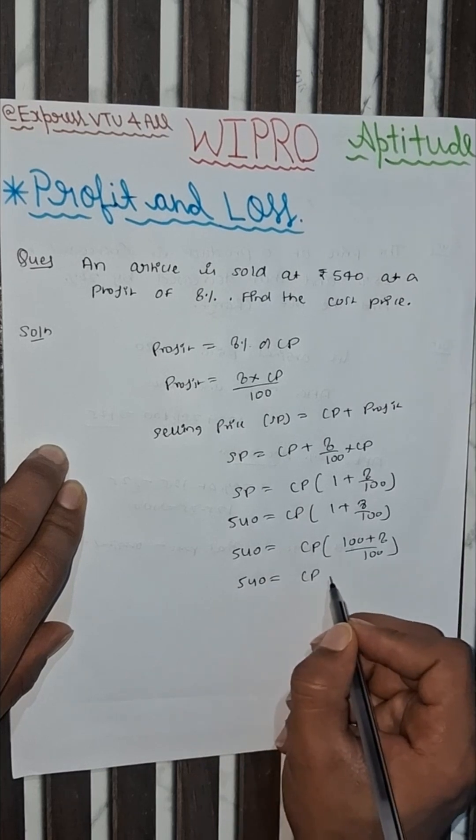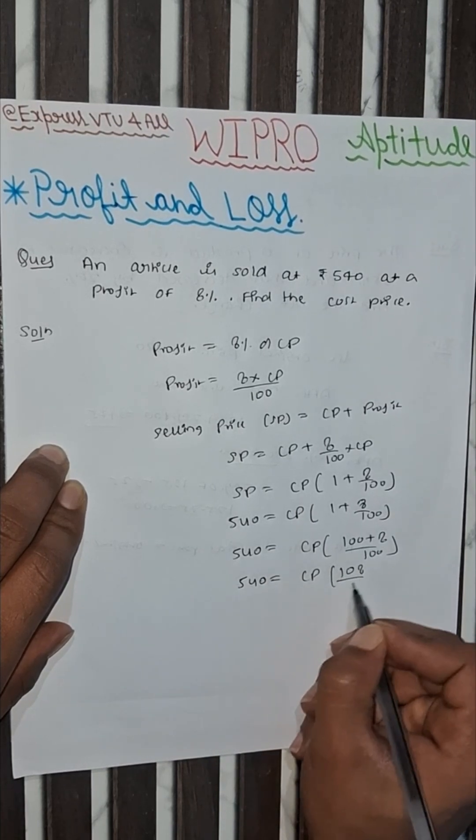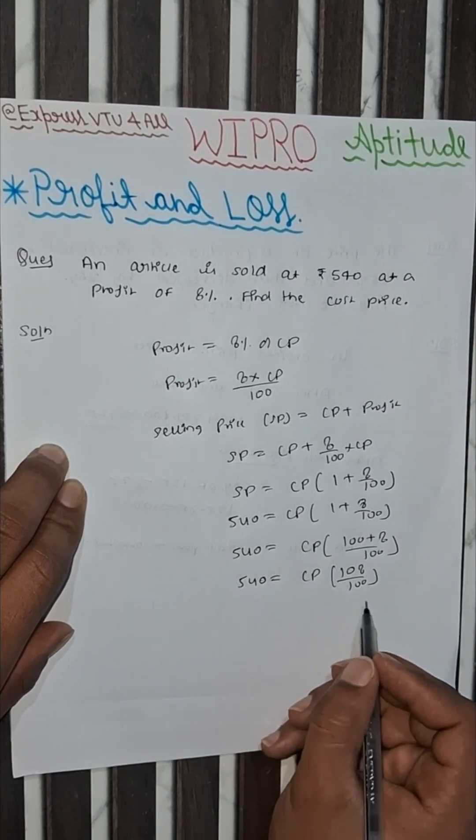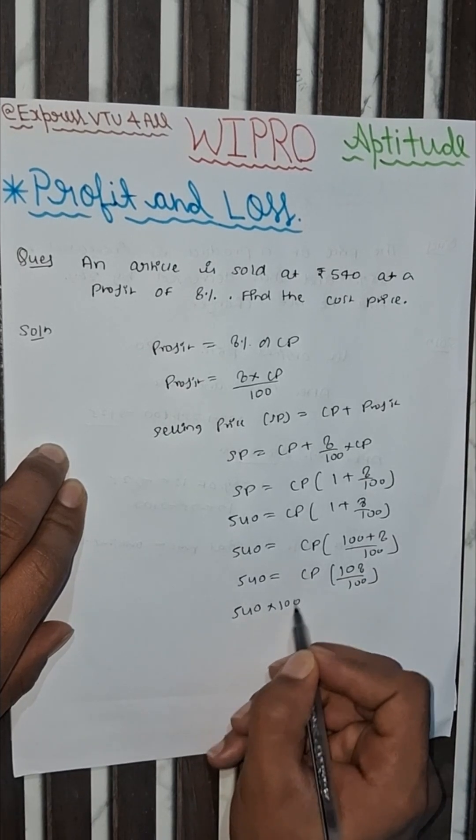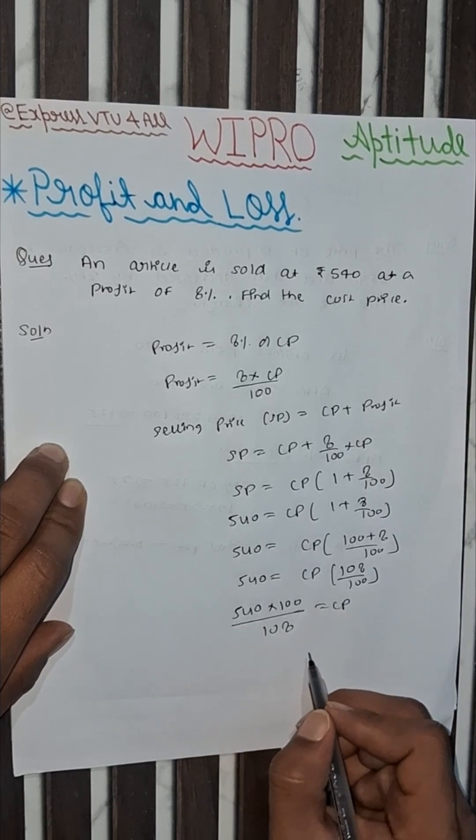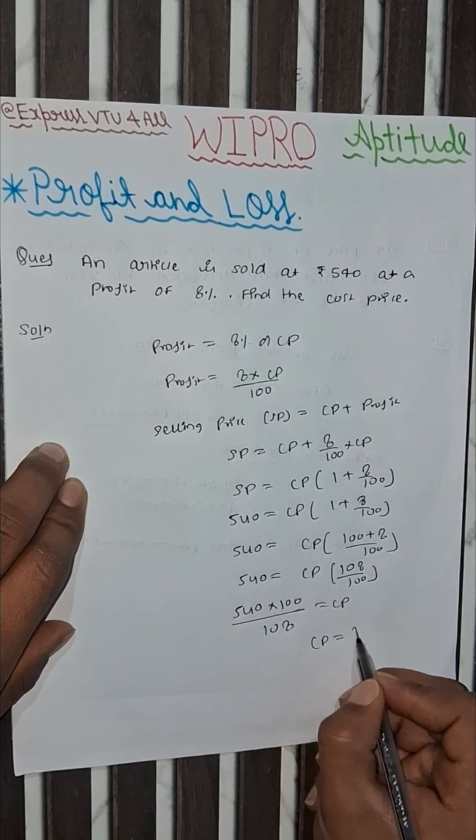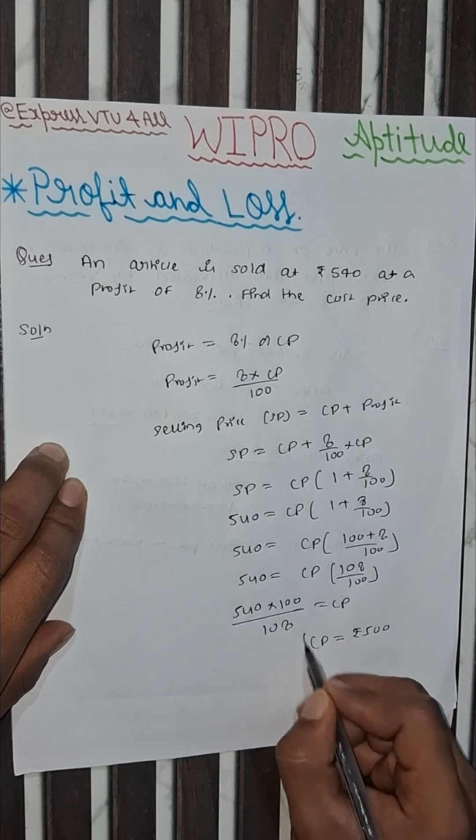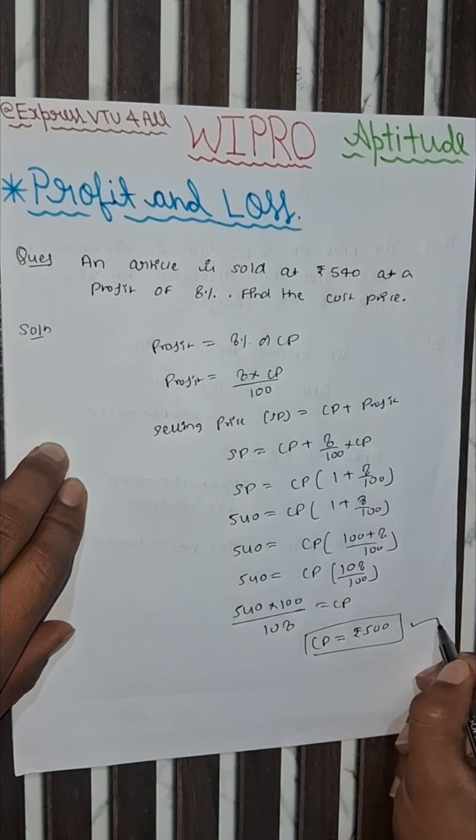Now multiply 540 by 100, then divide by 108, equals CP. When you calculate, it becomes CP equals rupees 500. This is our cost price, this is our final answer.